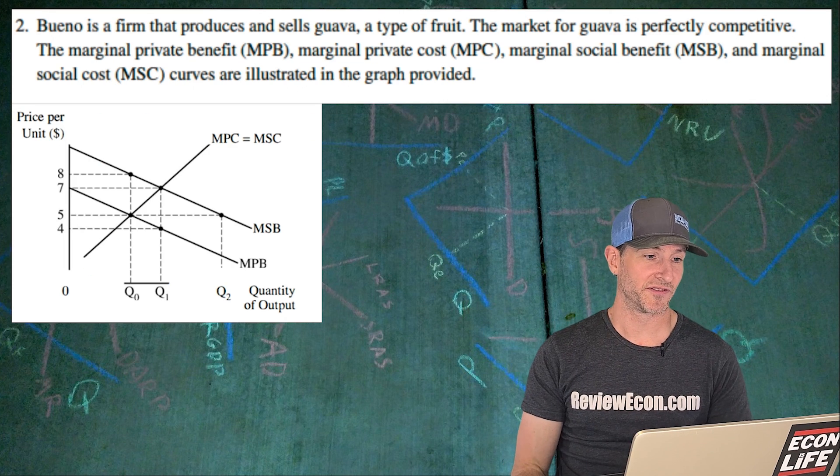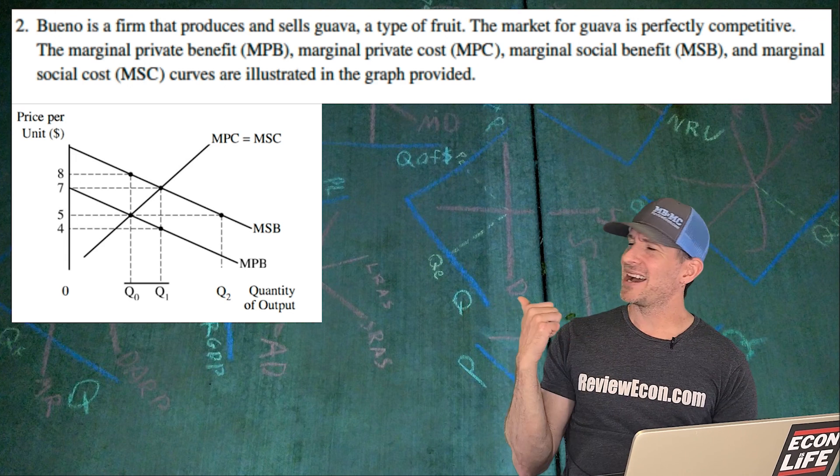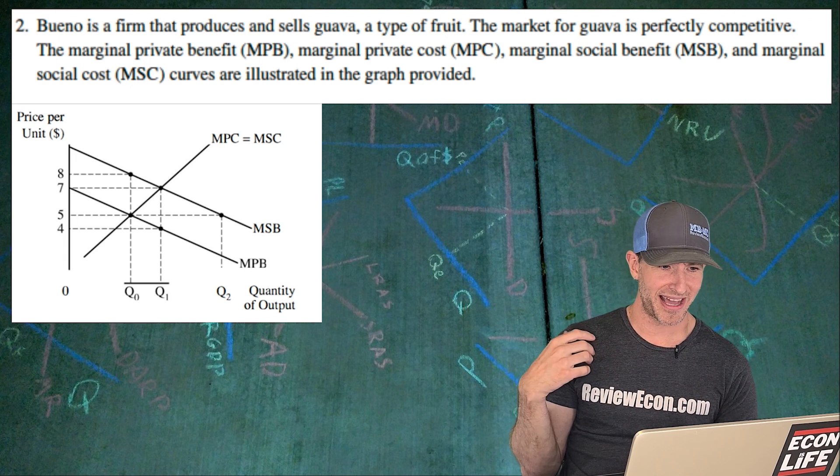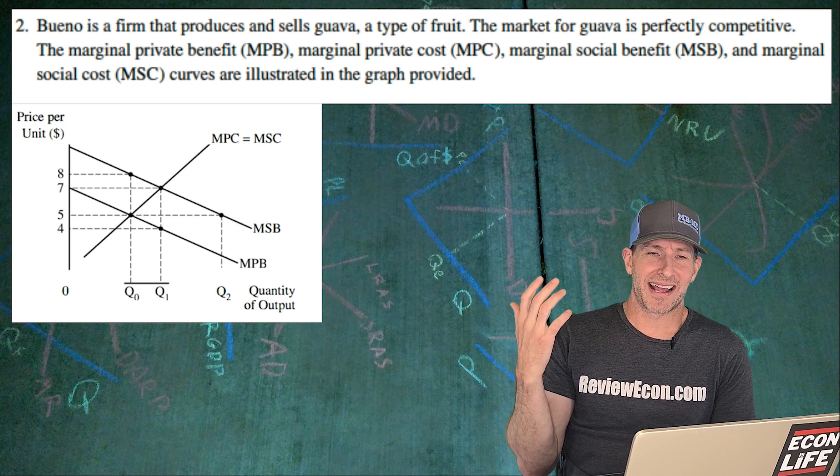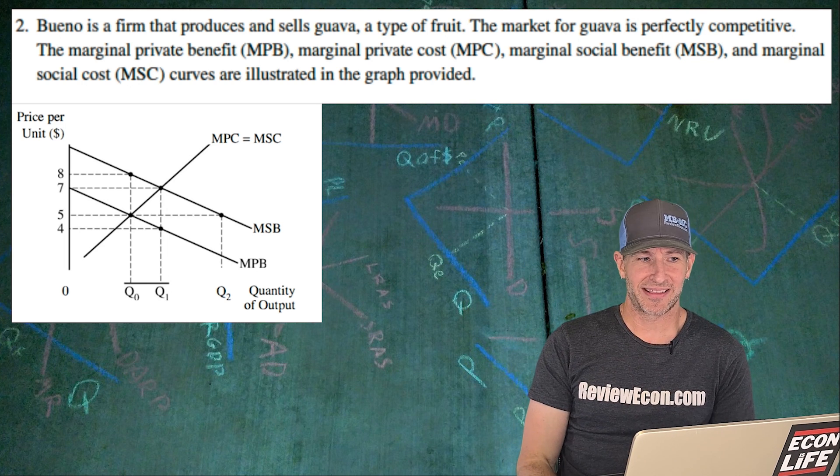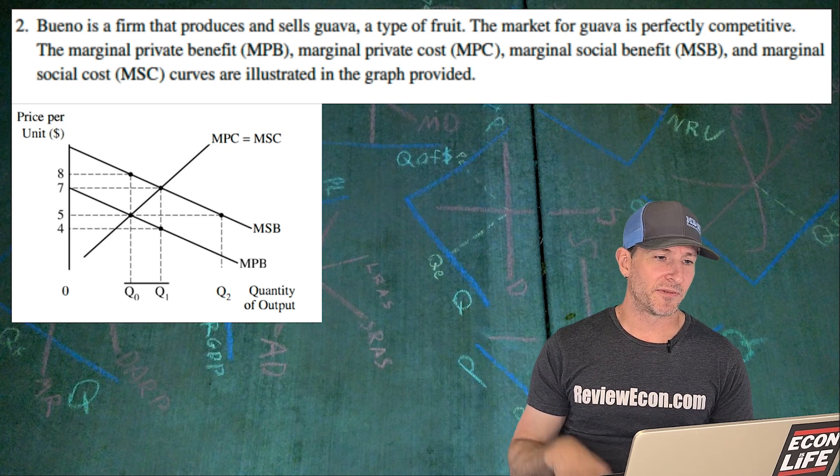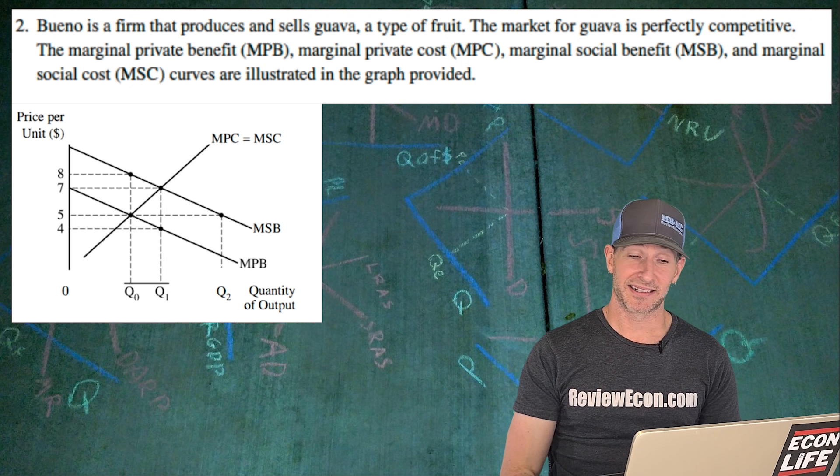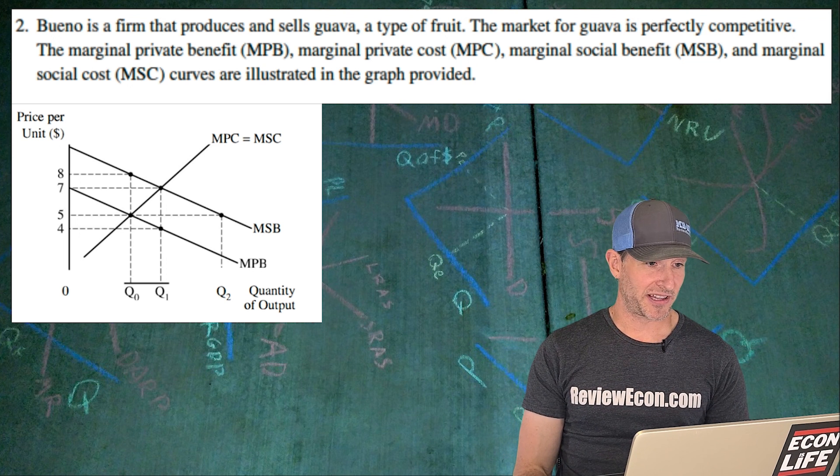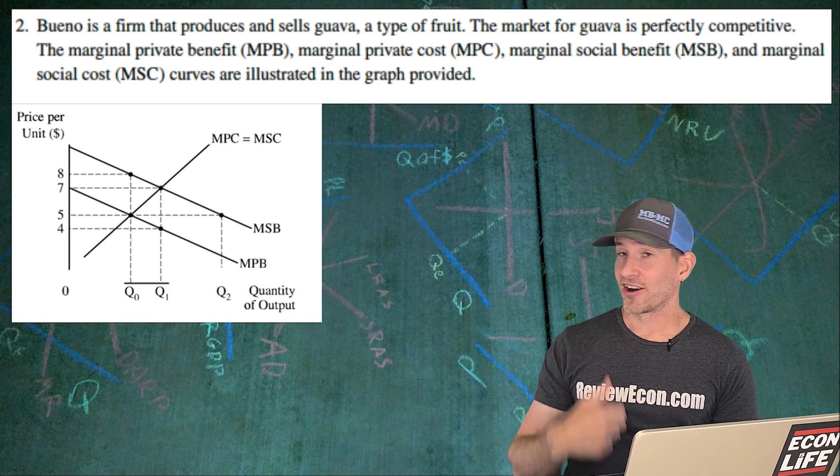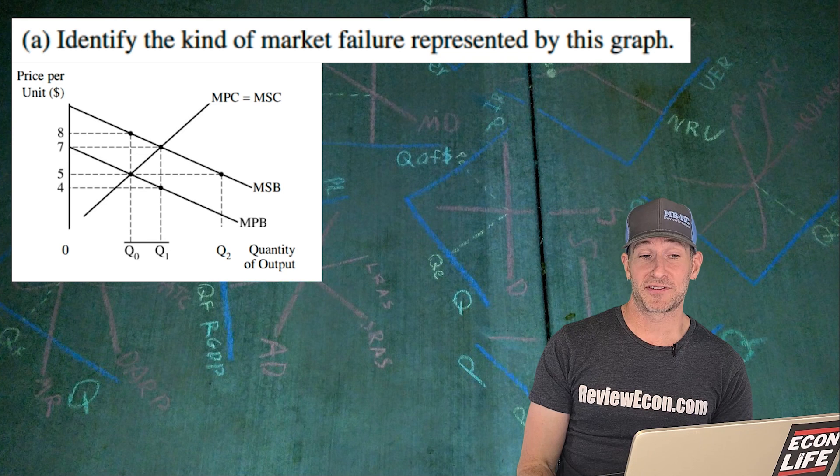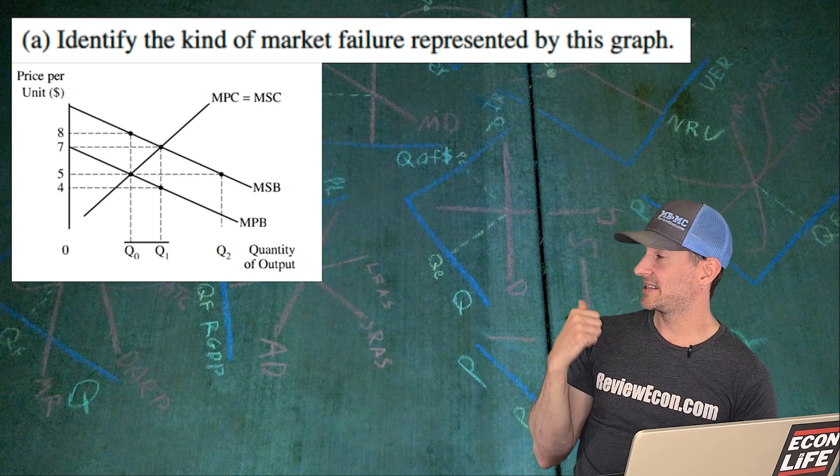On to the next question for number two. Here we have a strange looking graph. I'm not exactly sure what happened. It looks like a formatting error to me where the quantity axis didn't get drawn all the way. Hopefully that didn't trip anybody up. But we have Bueno, it's a firm that produces and sells guava, a type of fruit, and it's perfectly competitive. And we've got our graph here. So what we see here, first of all, is a market failure. And we have to identify that market failure.